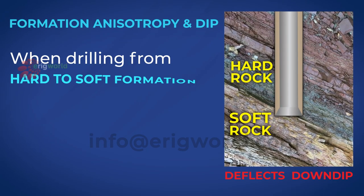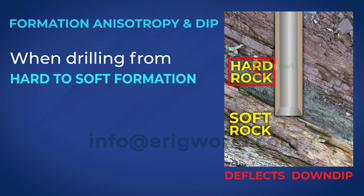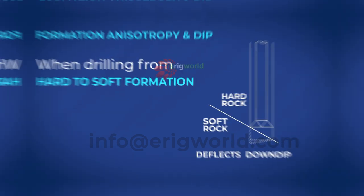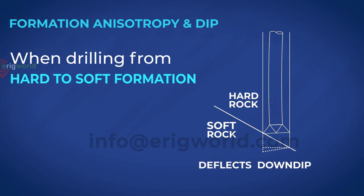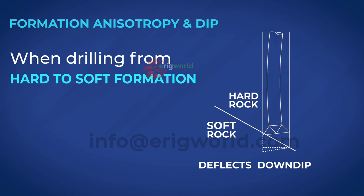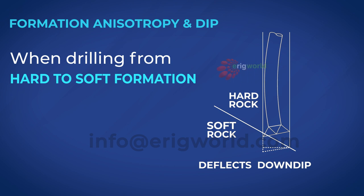When drilling from hard to soft formation, since more of the weight on bit is taken by the hard formation, the bit keeps drilling the soft formation and a moment is generated at the bit. This changes the pendulum length to the point of tangency as well as the side force at the bit, and this causes a change in the wellbore angle.